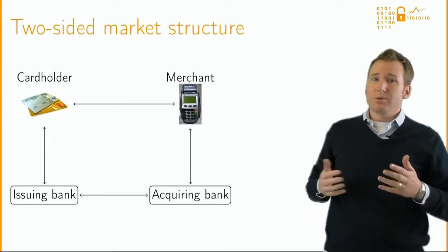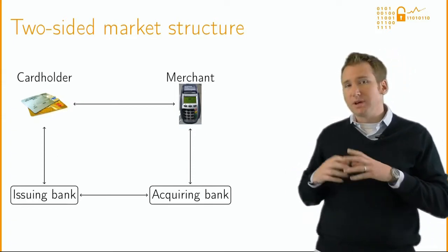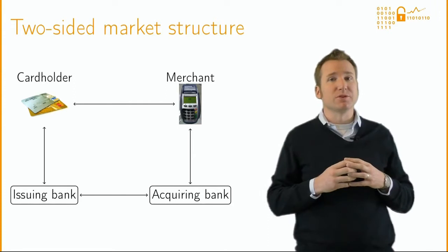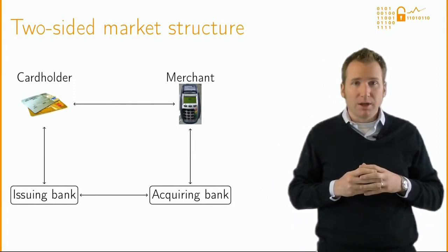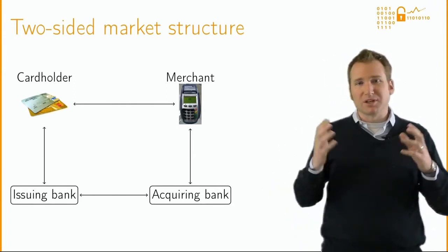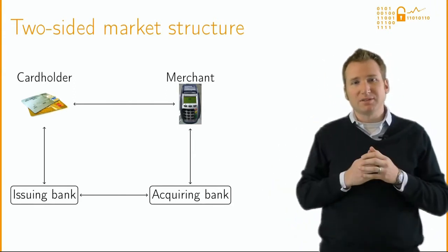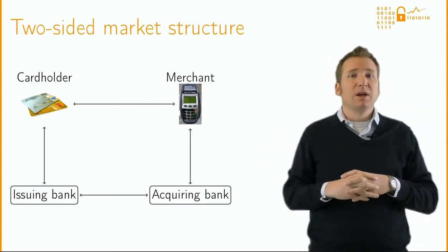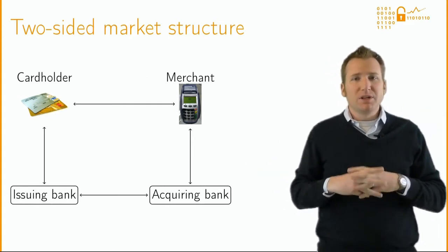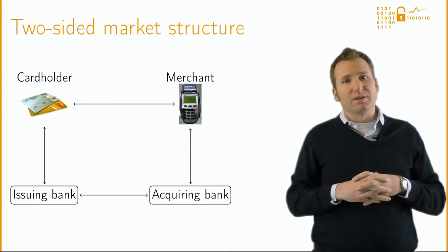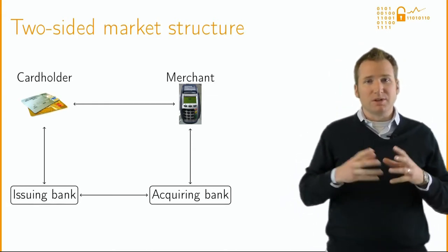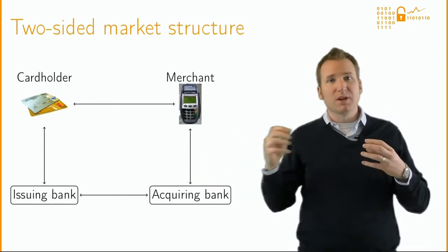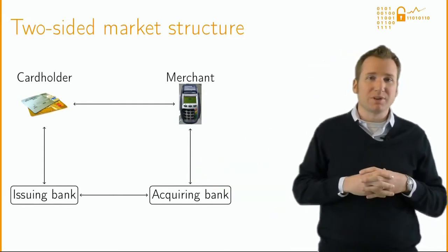Payment card networks are an example of what economists call a two-sided market. In such a market, two types of users are served by a common platform. Example two-sided markets include heterosexual online dating services, who need to attract both men and women to the service, and many sharing economy services popular today, such as Airbnb, who needs to find people to rent their spare rooms as well as customers willing to stay in them.